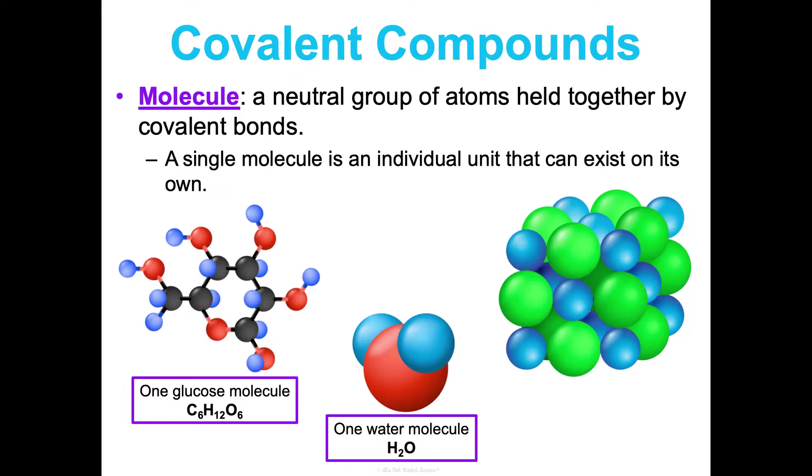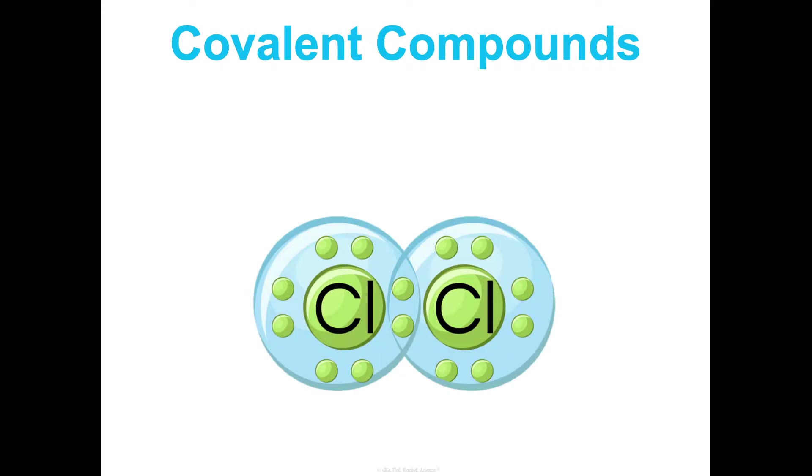But over here, look at sodium chloride or table salt, NaCl. Notice I did not outline in purple because it is not a molecule. Also notice I'm not just looking at one Na and one Cl; I'm looking at this entire crystal structure that forms in a one-to-one ratio. The NaCl indicates there's one sodium for every one chlorine. Whereas with covalent compounds, we can look at one individual molecule at a time, which is unique.